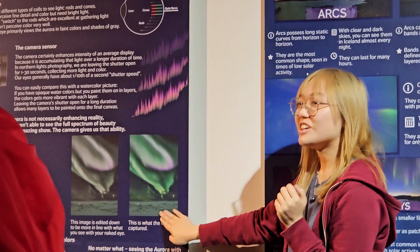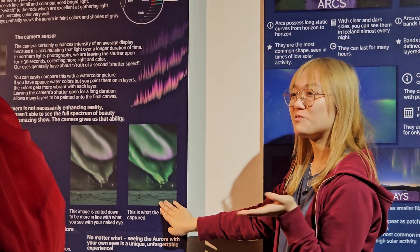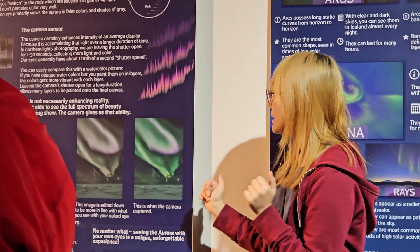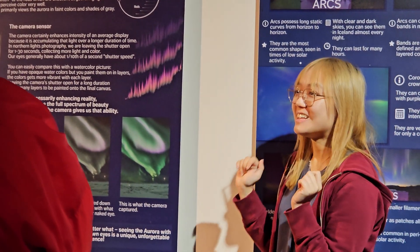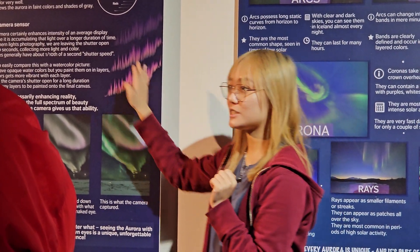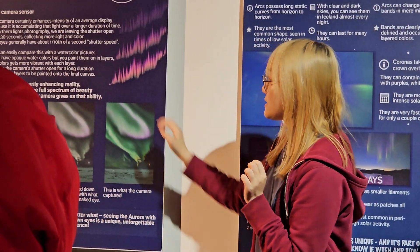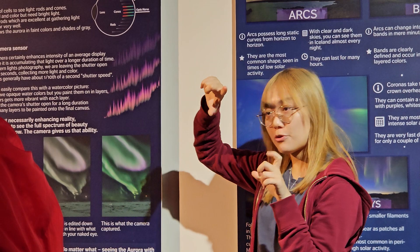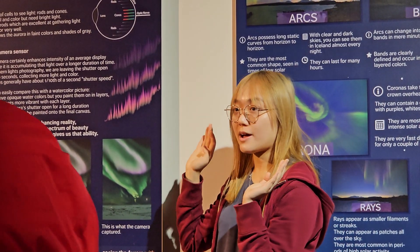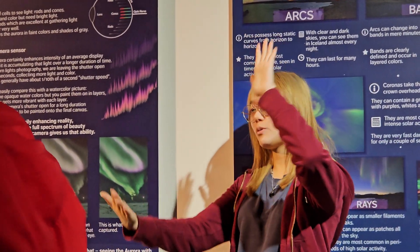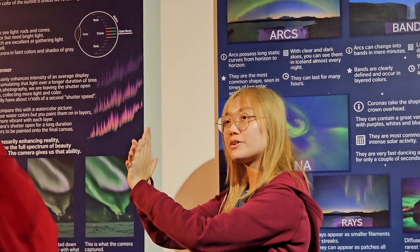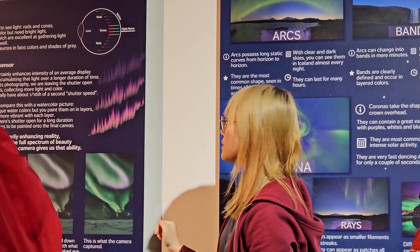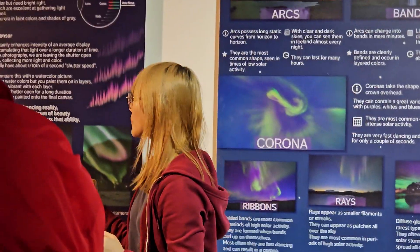And why can you see pictures and videos on the internet that show the aurora so green and so colorful? It's because of the camera. They have one function called long exposure, which means the camera captures the same scene over 30 seconds or even longer, and then combines all those frames together like layers to make the color more solid.